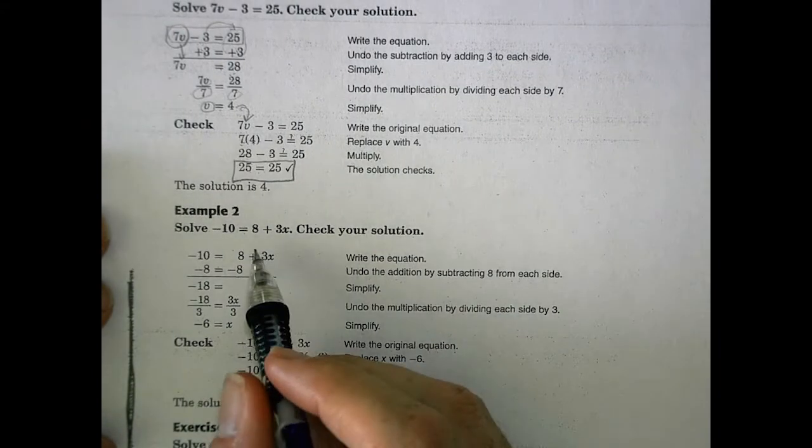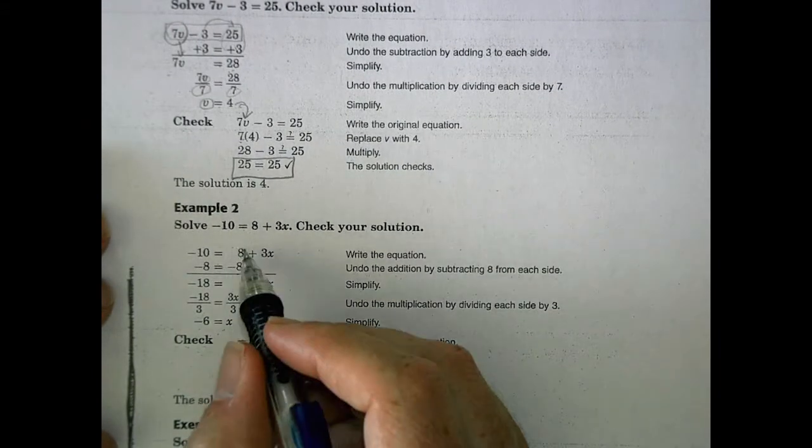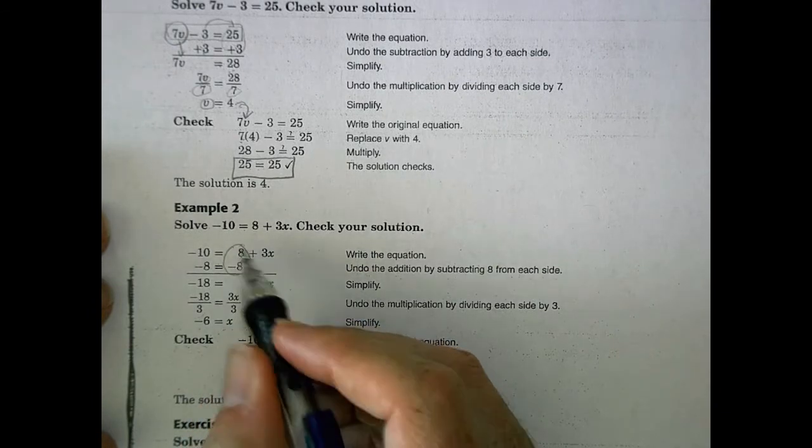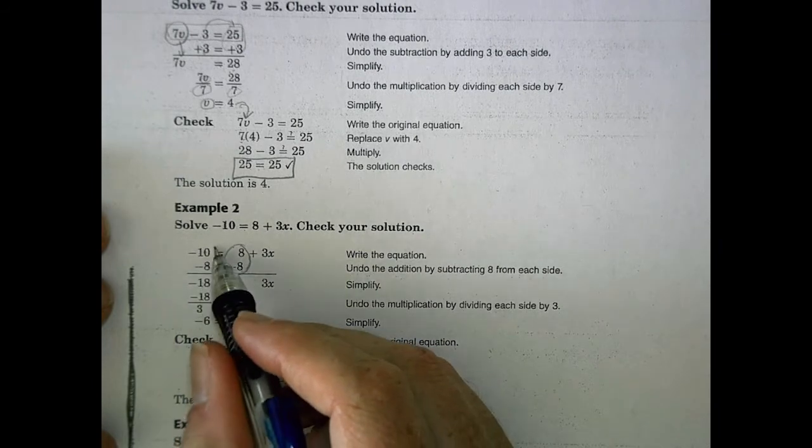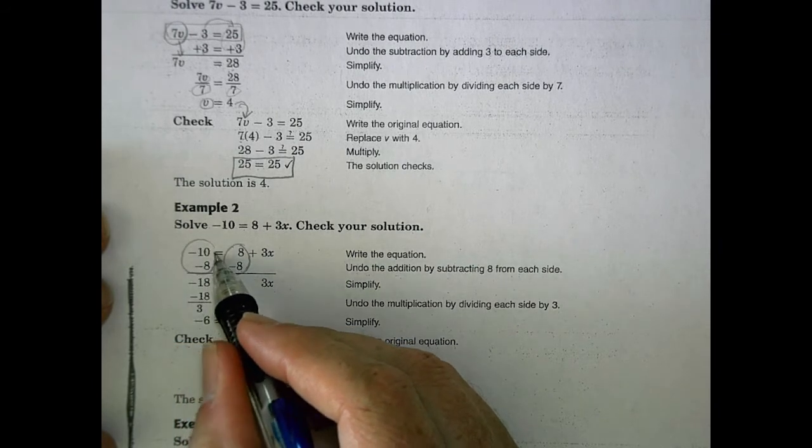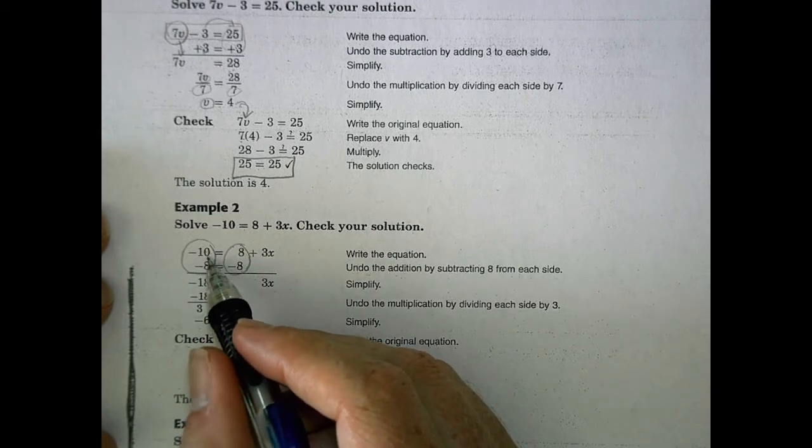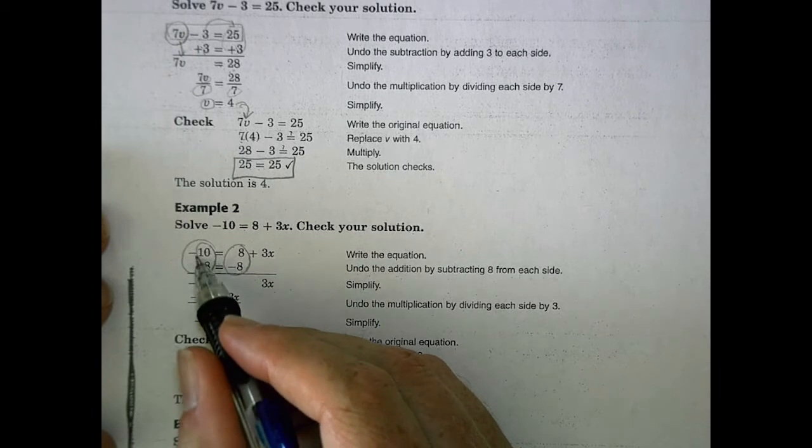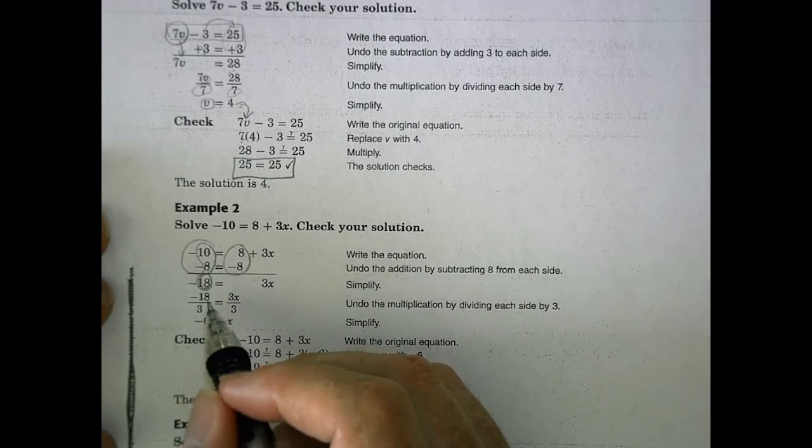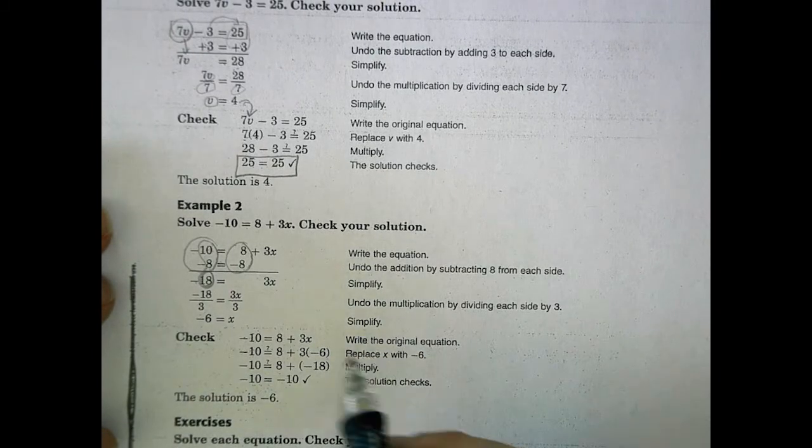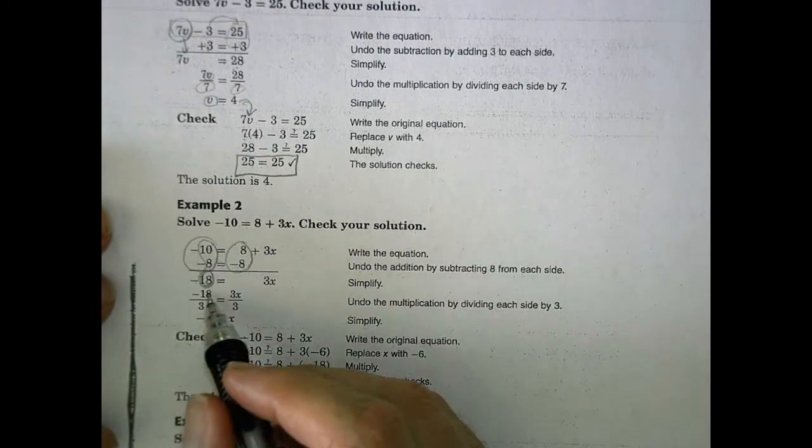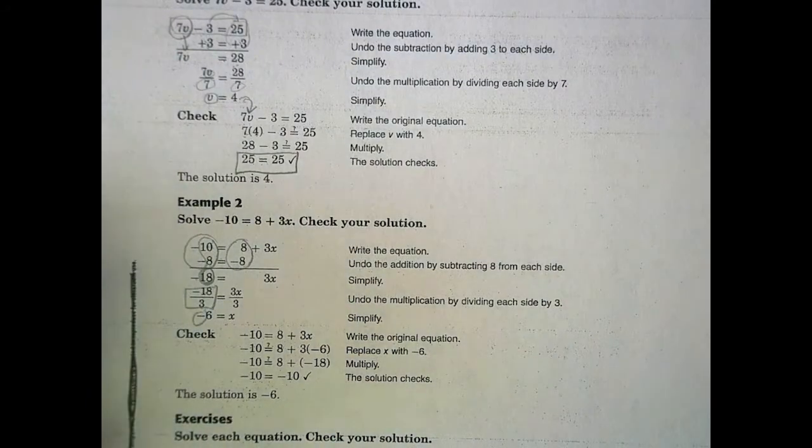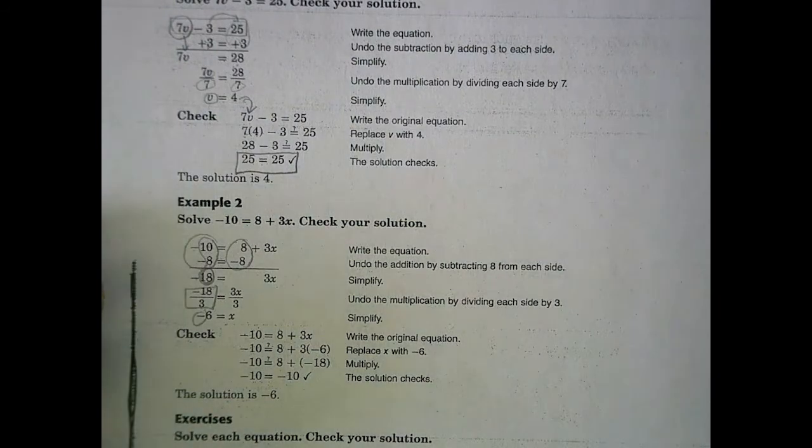Sometimes when we're using two-step equations, we have to make sure we are doing things properly with integers. In this example here, you can see they're going to subtract 8 from both sides. Now I'm subtracting two negative numbers. When the signs are the same, I find the sum. 10 and 8 is 18, and I keep the sign the same. Make sure you follow those same rules about working with integers, and then work on a solution. Here we're dividing negative by positive for a negative answer. Just lots of little places where you might make an error, so be careful.